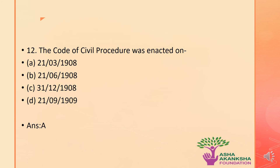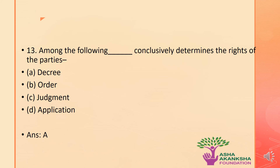The next question: the Code of Civil Procedure was enacted on which of the following dates? The options are: a) 21st March 1908, b) 21st June 1908, c) 31st December 1908, or d) 21st September 1909. The correct answer is option A — the Code of Civil Procedure was enacted on 21st March 1908.